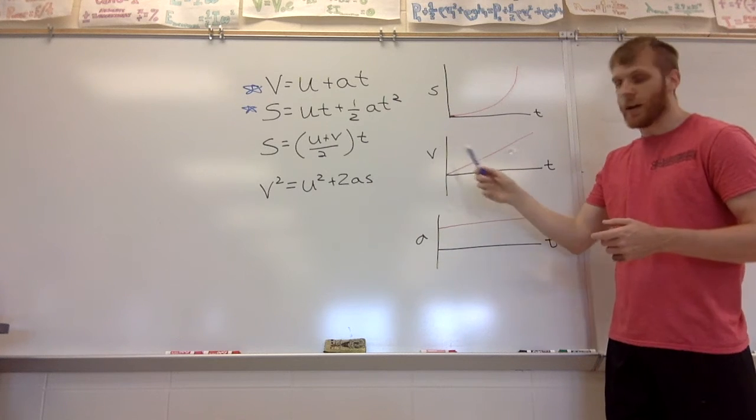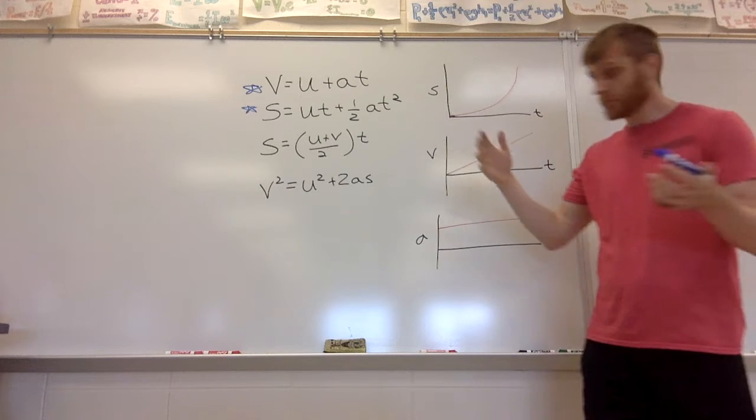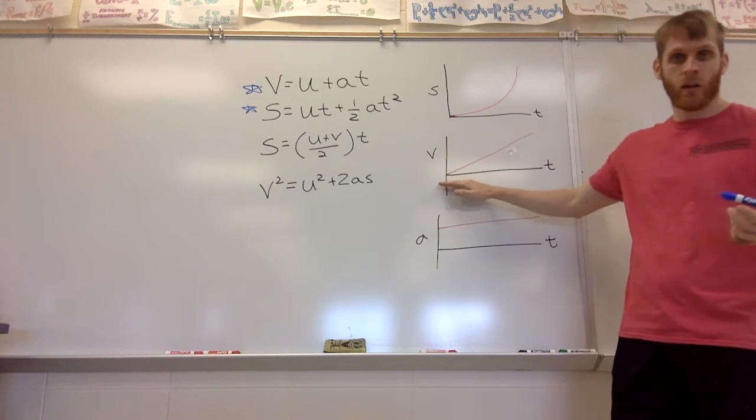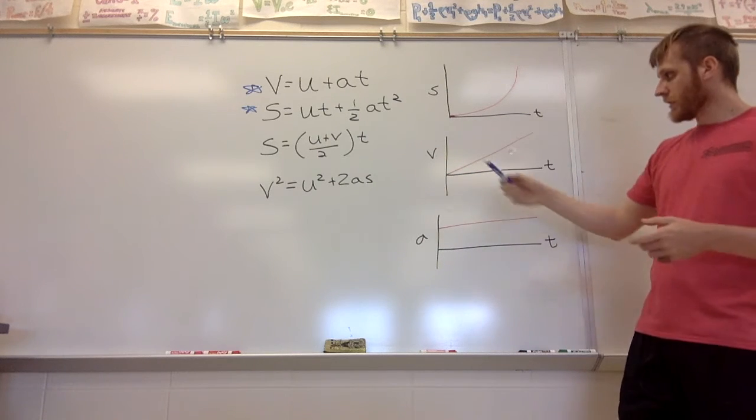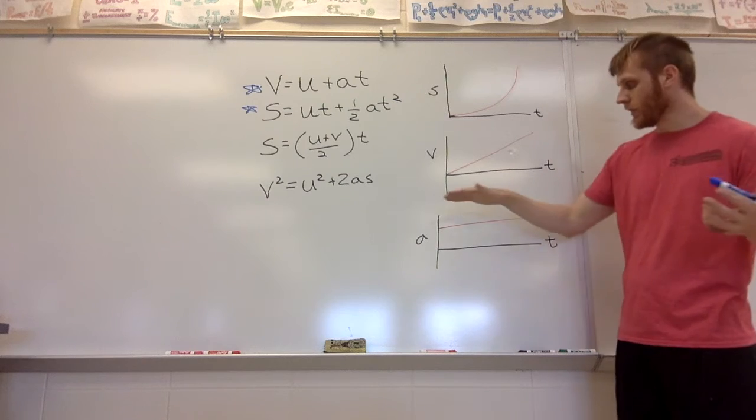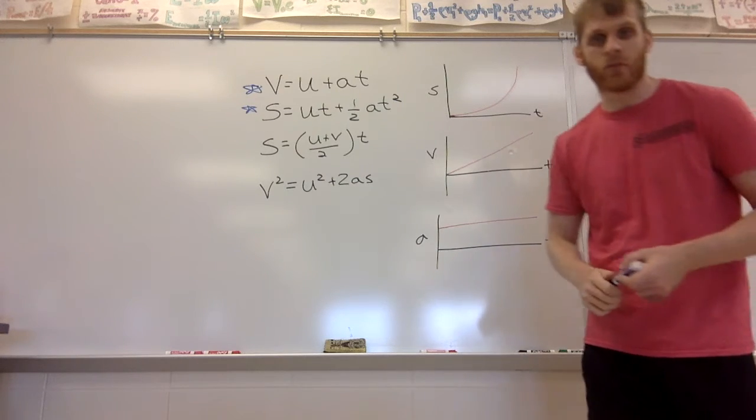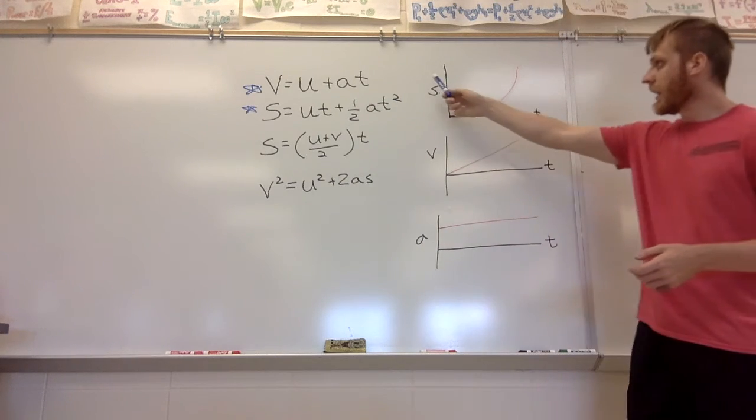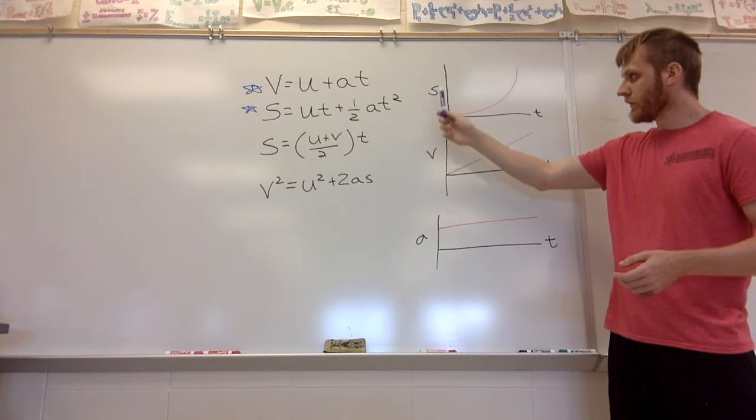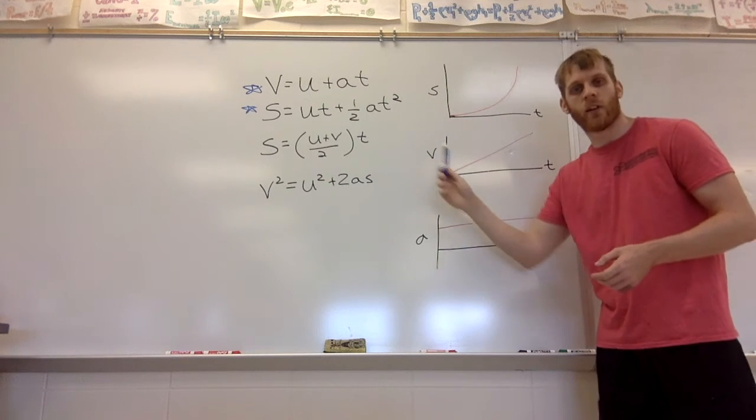That means that the velocity, the slope, starts off at zero and gets higher and higher and higher. The slope of this is a constant, and so the acceleration is going to be a constant positive number. So you should know the relationships between these. The slope of displacement is velocity. The slope of velocity is acceleration.